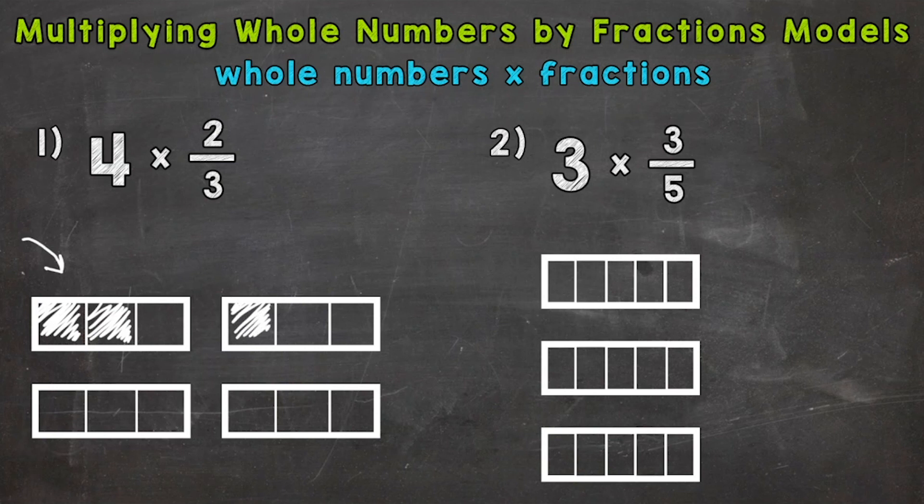So that's one group of two-thirds. So that would represent one times two-thirds. So let's do another one. There's one-third and two-thirds. So that would represent two groups of two-thirds, which would be two times two-thirds. But we want four. So let's do two more.